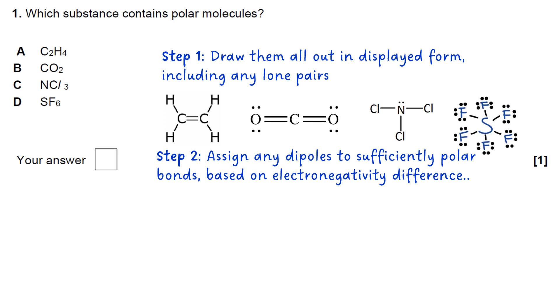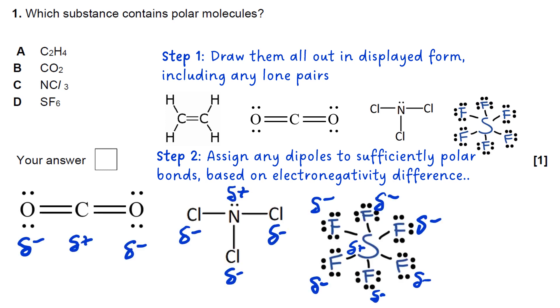In ethene, there's obviously no electronegativity difference between the two carbons because they're the same atom. But the electronegativity difference between carbon and hydrogen is too small to really give it any polar properties. Looking at the carbon dioxide, the nitrogen trichloride, and the sulfur hexafluoride, you can assign delta plus and delta minus according to the normal differences in electronegativity.